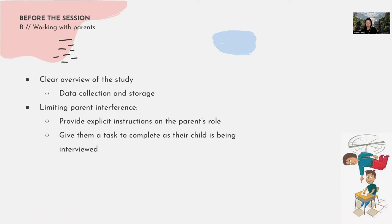Give parents a clear overview of the study — what is covered, what kids are required to do, and what parents are required to do. Be transparent about how data is collected: that you'll be recording video and audio, that stakeholders may be observing, and how data storage is handled. To limit parental interference, give parents explicit instructions from the start about what is asked of them. During the session, if a parent keeps interfering, be upfront and tell them to give the kid a chance to answer first. In the worst case, give parents a task to complete while the child is being interviewed, such as a short survey on parental monitoring techniques.